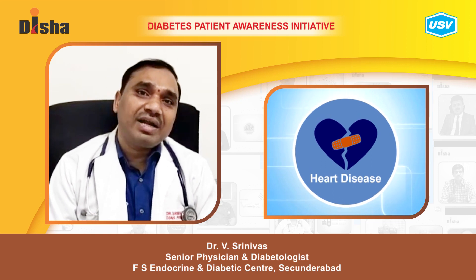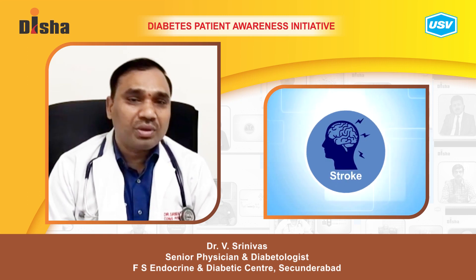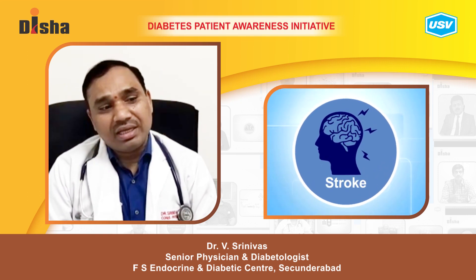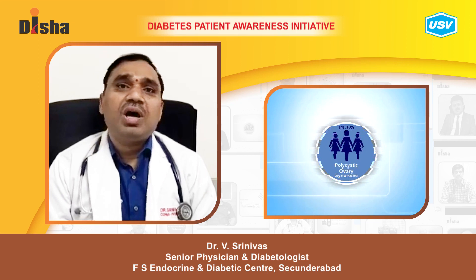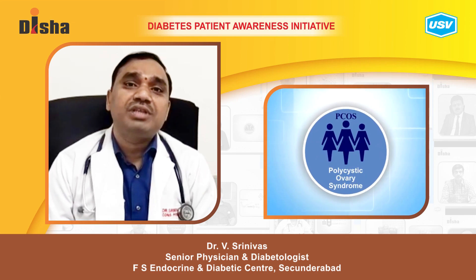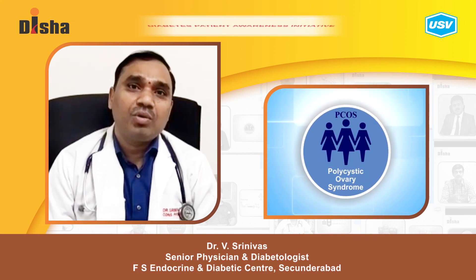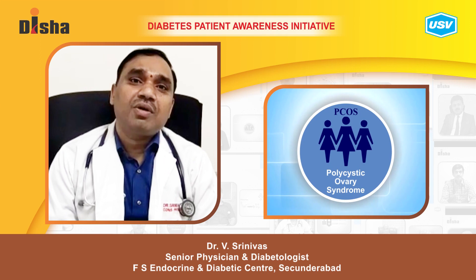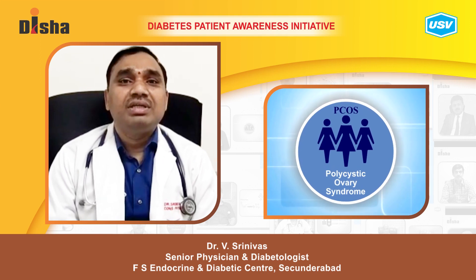If you have a past history of heart disease or stroke, your chance of becoming diabetic is high. In females especially, if menstrual cycles are irregular and overweight or obesity is present, the condition is called PCOD and the chance of developing diabetes is high.